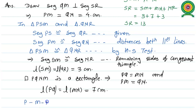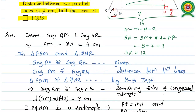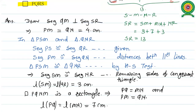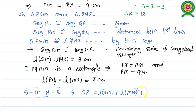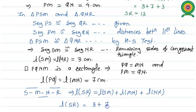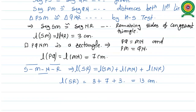Once points S, M, N, R are collinear, the overall value of SR equals SM plus MN plus NR. Length of SR equals SM plus MN plus NR, which equals the length of SR. So length of SR equals 3 cm plus 7 cm plus 3 cm, giving SR equals 13 cm.